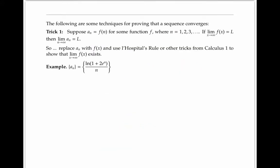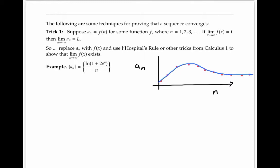The rest of this video will give some techniques for proving that sequences converge. The first technique is to use standard calculus tricks for finding limits of functions. Even though a sequence is only defined on positive integers, sometimes it's possible to find a function defined on all positive real numbers that agrees with our sequence on the integers — in other words, the terms a_n are equal to f(n) for this function f. When this happens, if the limit as x goes to infinity of f(x) equals L, then the limit as n goes to infinity of a_n also equals L. So we can figure out if a sequence converges by replacing a_n with f(x) and using L'Hôpital's rule or other calculus tricks.